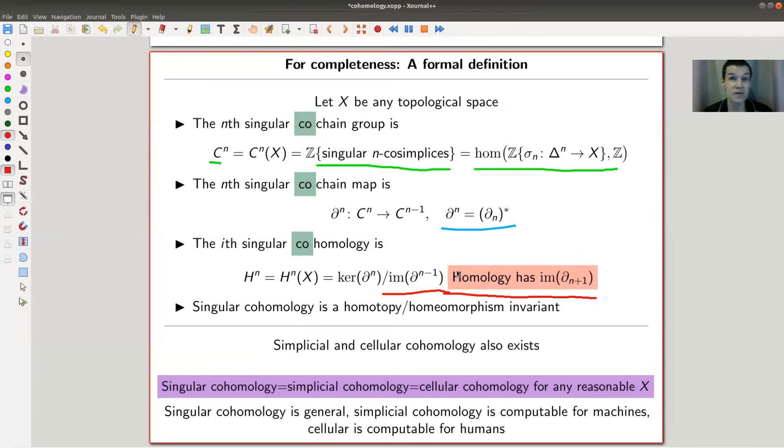I will make it more precise in a second by drawing a picture. But anyway, so this will be the definition of singular cohomology. And there's also simplicial cohomology. And there's also cellular cohomology. And as before, they agree for any reasonable space. So you just pick your favorite one. As soon as your space is reasonable, just pick your favorite one, compute it, and all the others will be the same.